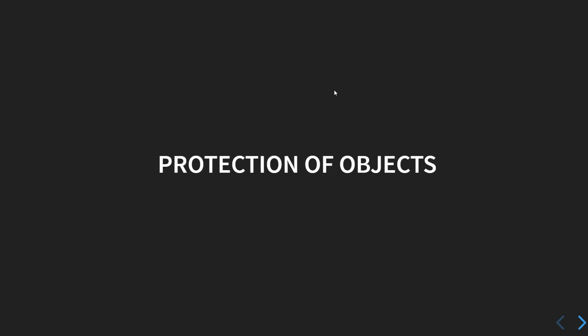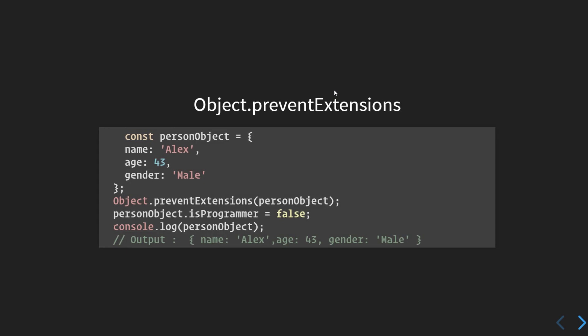In this video we'll discuss protection of objects. There are often cases when we don't want anyone to tamper with our objects — we don't want anyone to modify any key-value pair of an object. Given the flexibility that JavaScript provides, it is very easy to mistakenly reassign properties of an object that we are not meant to change. There are three major ways of protecting objects in JavaScript.